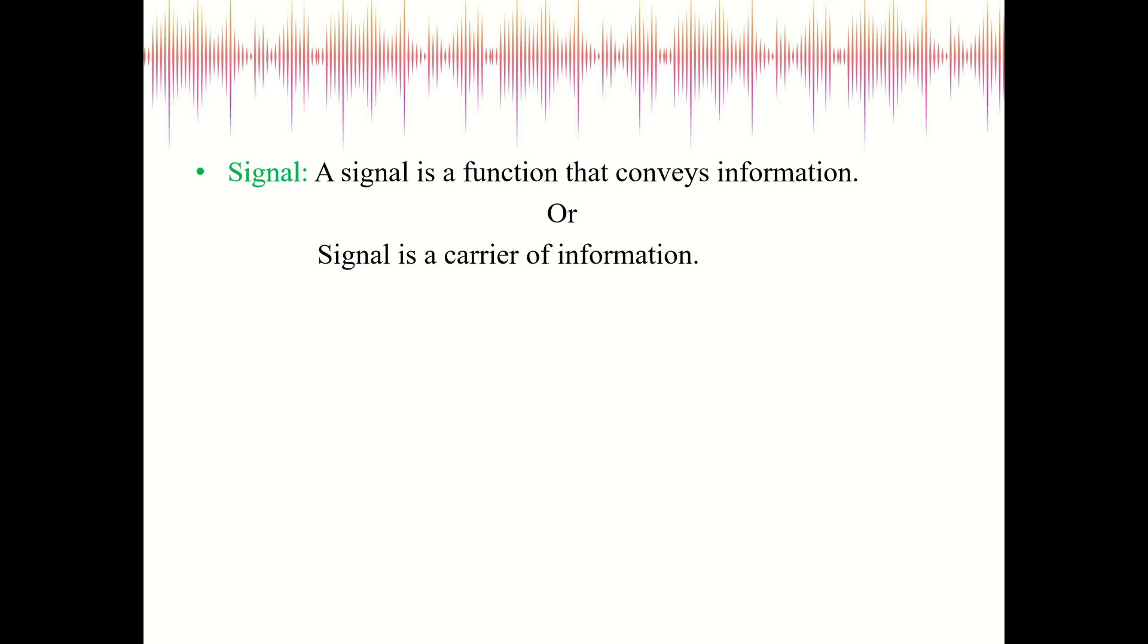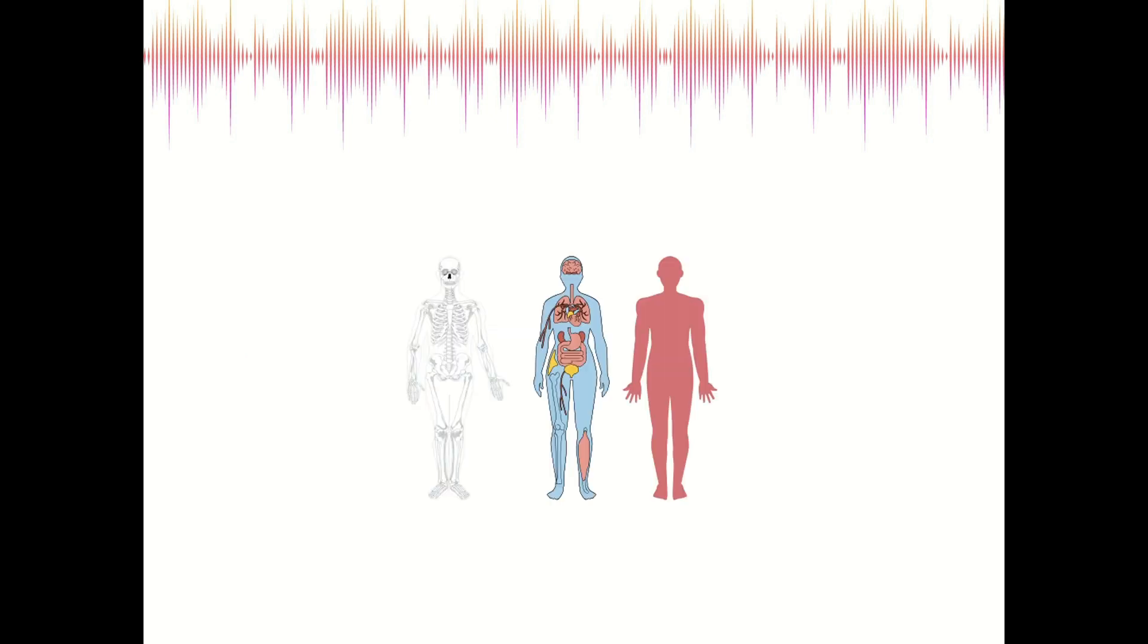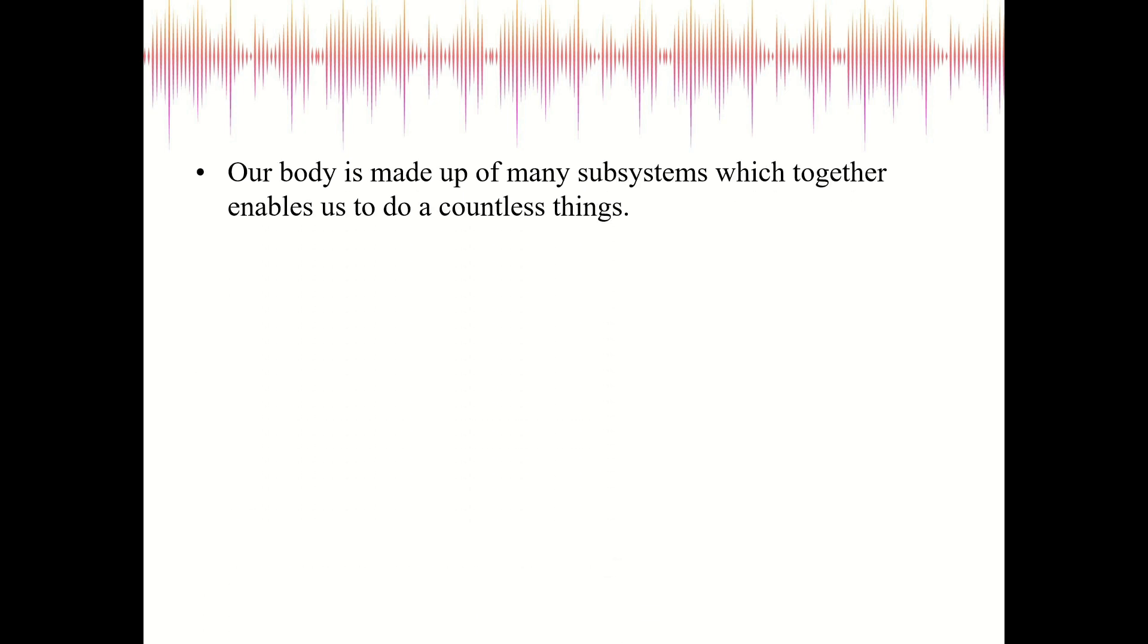The system is a group of similar or dissimilar units working together for a common purpose. We see that the human body is a system. The answer is yes, we can absolutely see that our human body works as a system. But why? We see that our body is made up of many subsystems which together enable us to do countless things.